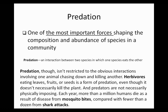When you think of predation as an interaction between two species in which one eats another, sometimes these are not nearly as obvious as a lion eating a gazelle or a human eating a cheeseburger. Predation is not restricted to obvious interactions where one animal chases down and kills another. Herbivores eat leaves, fruits, or seeds as a form of predation even though it doesn't necessarily kill the plant. And predators are not necessarily physically imposing — a mosquito is a very dangerous predator that kills more than a million humans each year.